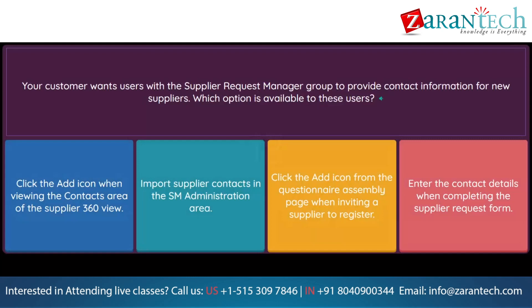Question. Your customer wants users with the supplier request manager group to provide contact information for new suppliers. Which option is available to these users? Option 1: Click the add icon when viewing the contacts area of the supplier 360 view. Option 2: Import supplier contacts in the SM administration area. Option 3: Click the add icon from the questionnaire assembly page when inviting a supplier to register. Option 4: Enter the contact details when completing the supplier request form.